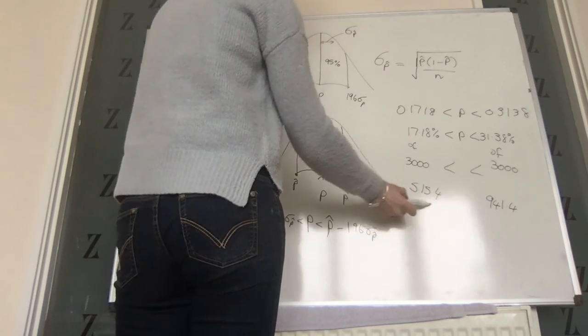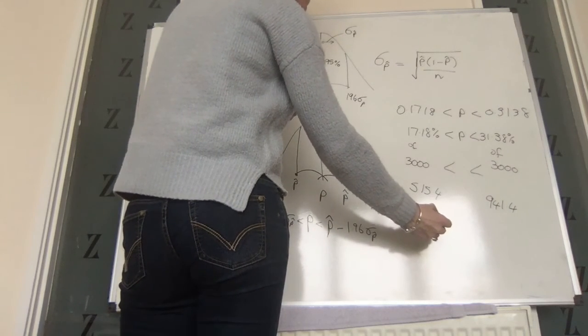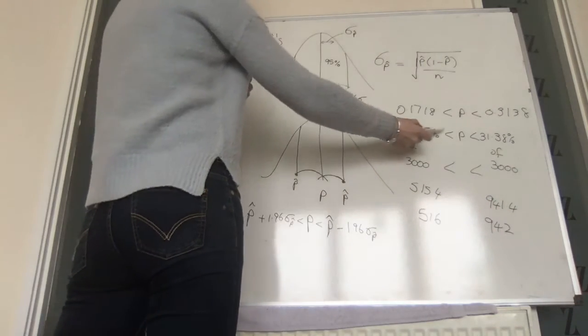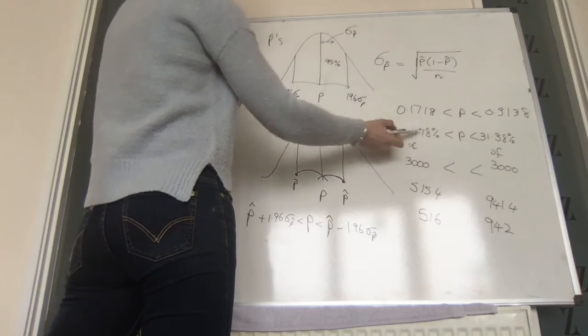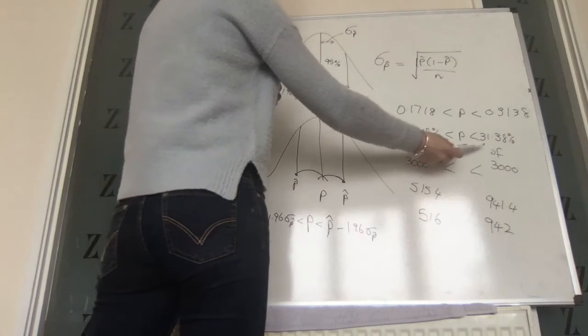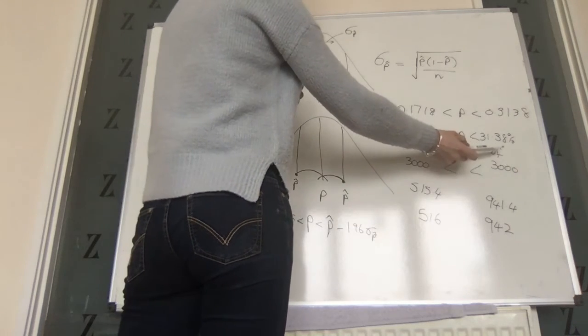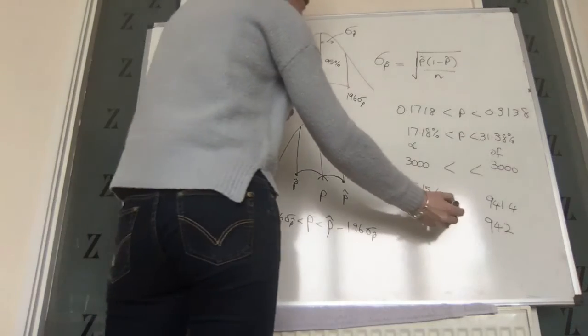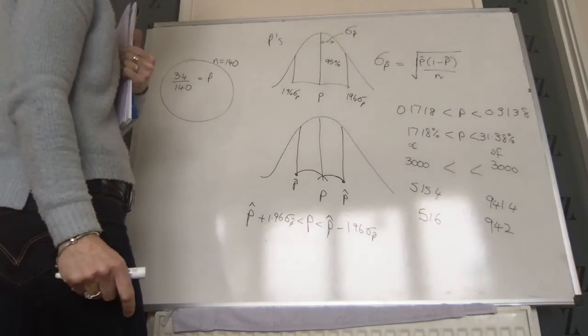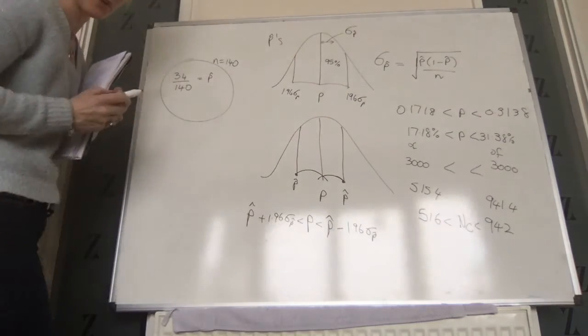And this number is 941.4. So we need to round up because you can't have 515.4 of a computer damaged. So 516 and 942. So if the proportion was, that's the lowest it can be, we are 95% confident it's in that interval. So the lowest number that could be damaged is that percentage of 3,000. The highest is that percentage of 3,000. And that is our interval for the number of computers that are damaged. So the number of computers damaged has to be between that, or we're 95% confident.